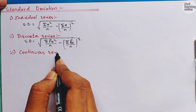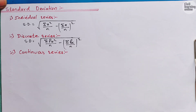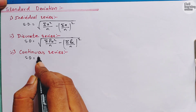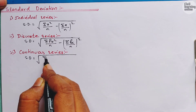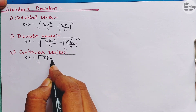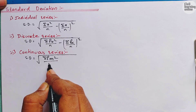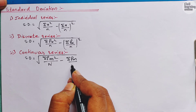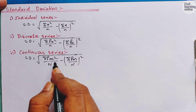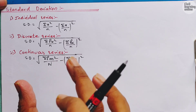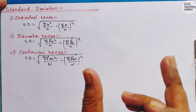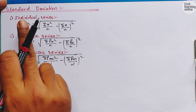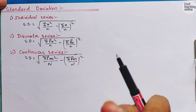The third one is continuous series. For continuous series, the formula for standard deviation is: SD = √(Σfm²/n − (Σfm/n)²). Here m represents the midpoint — we are given values of marks or class and we have to take the mean for continuous series. In this video I will be solving an example based on individual series.